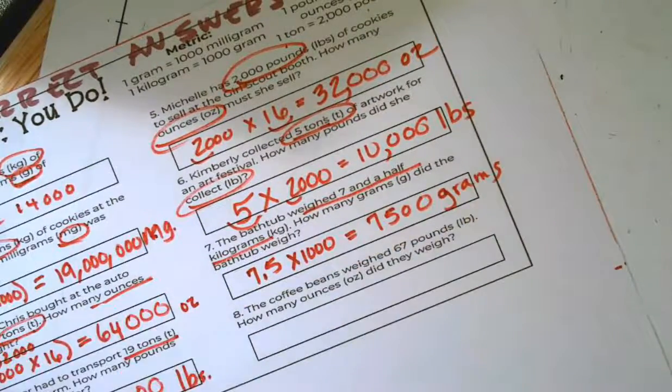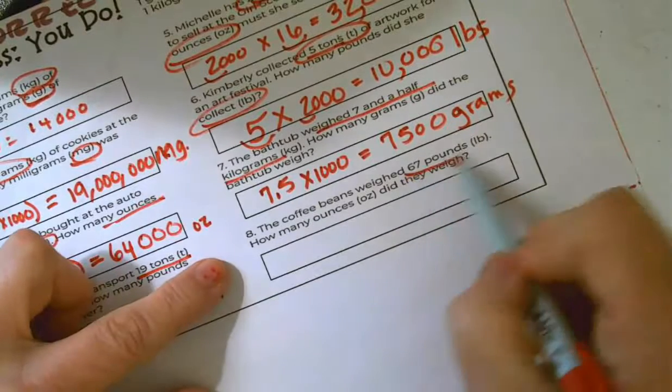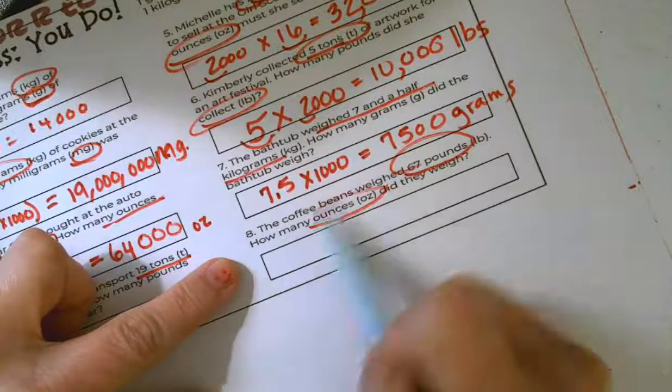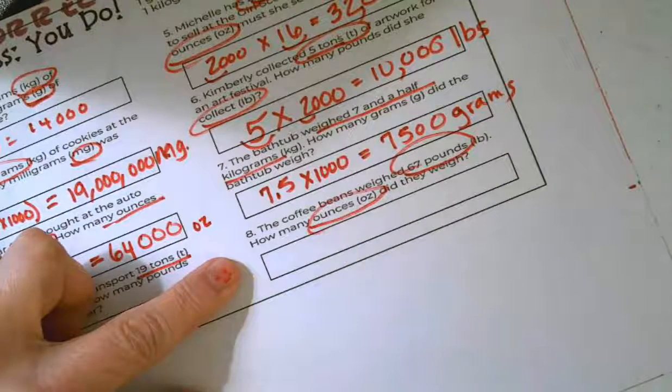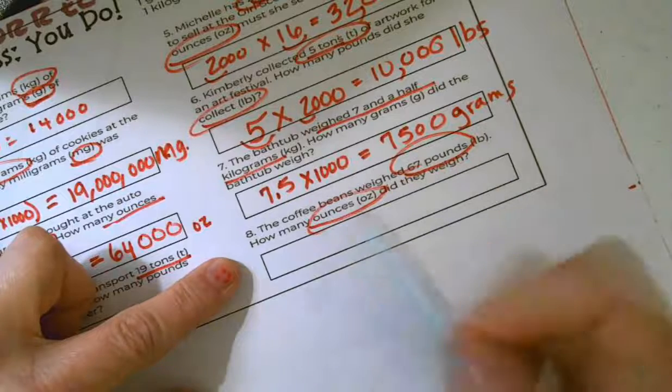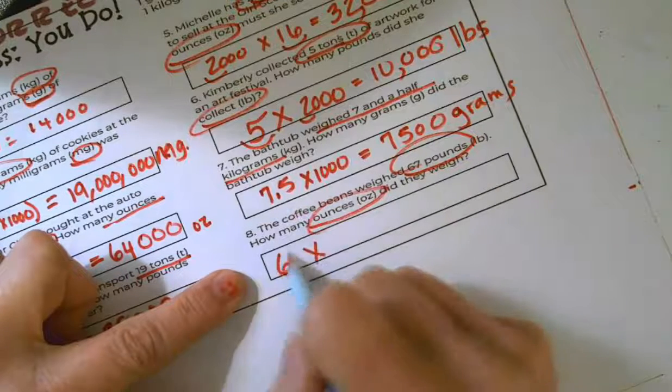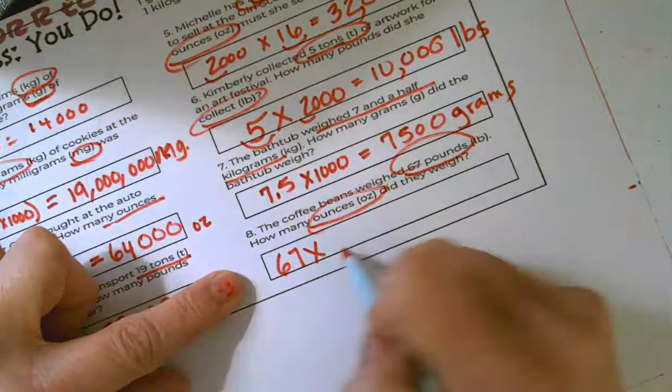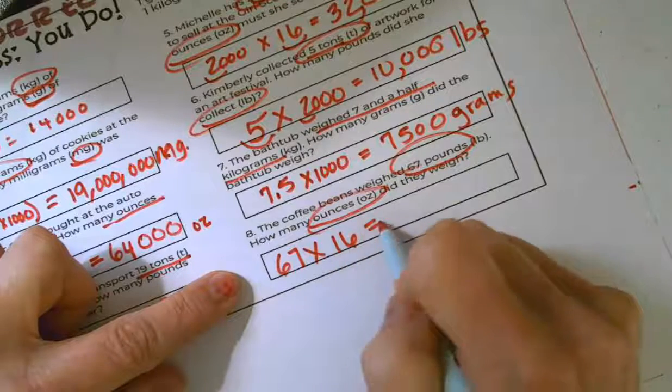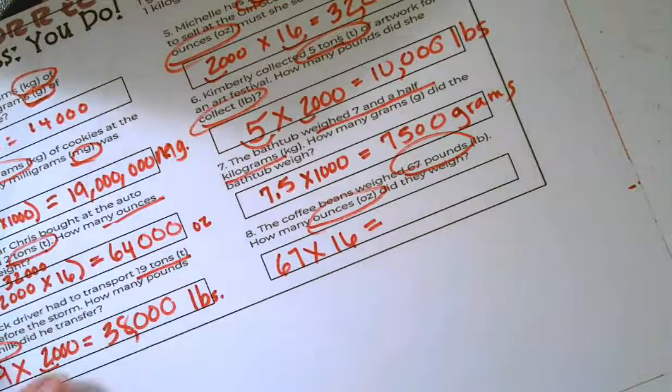Okay, number eight, the coffee beans weighed 67 pounds. How many ounces did they weigh? Again, I'm going from pounds to ounces. So I'm going to multiply. There's 67 pounds. I know there's 16 ounces per pound. So I'm going to multiply 67 times 16.